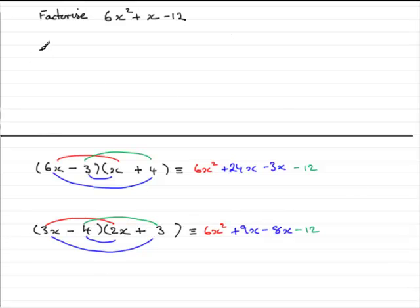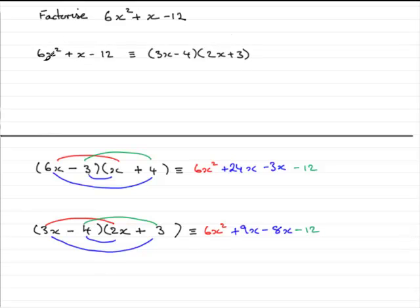We've got what we want, so all we need to do now is put the answer in. 6x squared plus x minus 12 — remember to use an identity sign rather than an equal sign — factorises as (3x minus 4) multiplied by (2x plus 3). These do take a lot more practice when you've got a number at the front which is not a prime number and can be split into two other factors. Hopefully that gives you some idea of what to expect in those harder types. Just be patient, make sure you do things in a systematic way, and eventually you should come across the right combination.